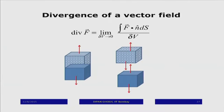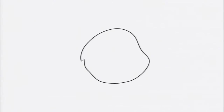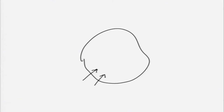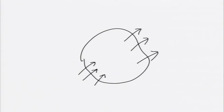The idea of divergence — I am dealing with point functions, a vector field defined at every point. I take the example of fluid because it is much easier to understand. Supposing you have a closed volume, certain amount of fluid is going in, certain amount is coming out. Normally you would think whatever is going in will only be coming out — that is what happens in a normal water reservoir. If the inward flux is equal to the outward flux, this is the situation of zero divergence.